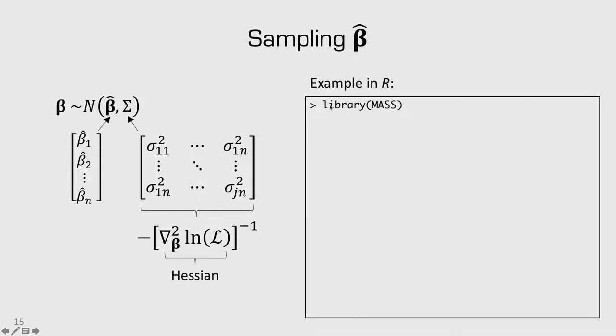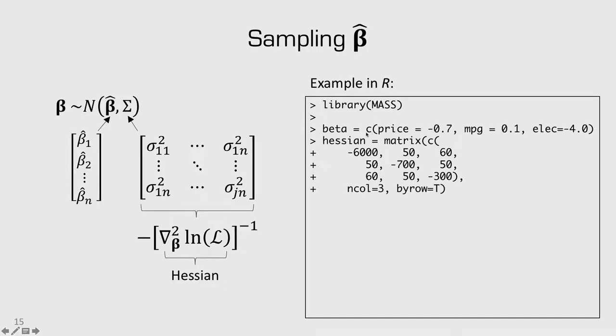First, we have to load the library, mass, which contains the function we're going to use. And here, I've just populated an example where I have three different attributes for beta. So, there's three values in my beta vector.